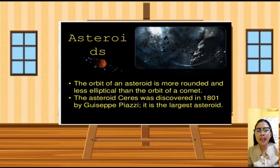The orbit of an asteroid is more rounded and less elliptical than the orbit of a comet. Asteroids can be found in asteroid belt, in between Mars and Jupiter. The asteroid Ceres was discovered in 1801 by Giuseppe Piazzi. It is the largest asteroid.